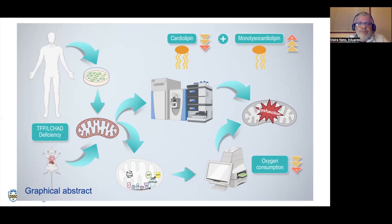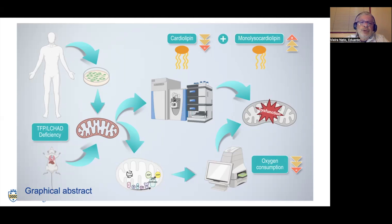What we saw was a decrease in oxygen consumption of these human cells, and this oxygen consumption reduction was related to cardiolipin decrease and monolysocardiolipin increase, although monolysocardiolipin increase was sex-dependent. The beta-TFP mice also had a cardiolipin decrease and a monolysocardiolipin increase that was also sex-dependent.